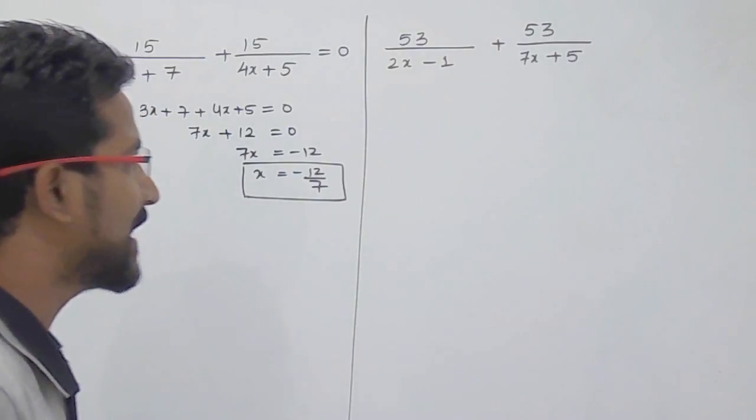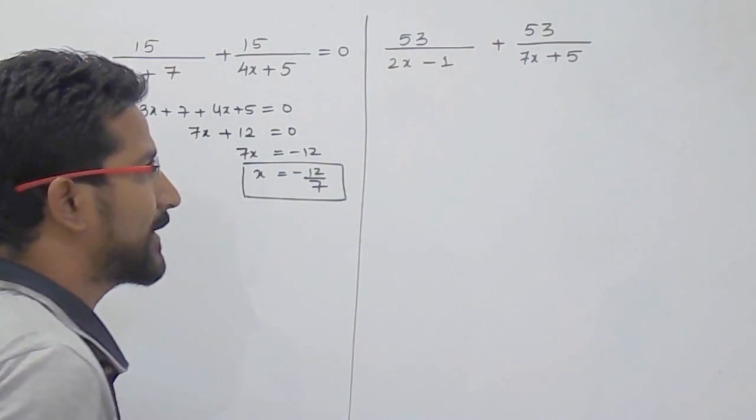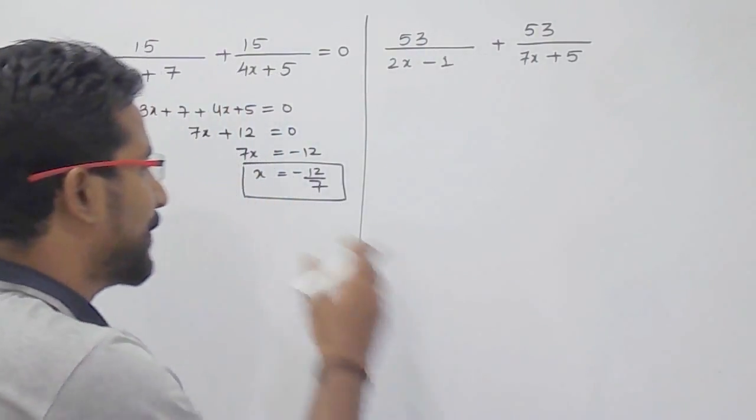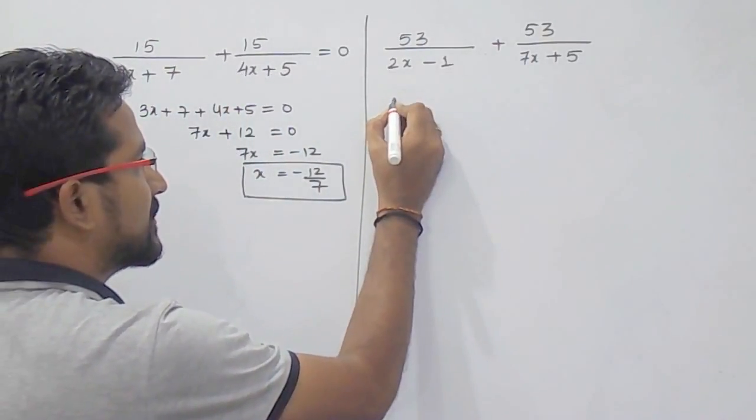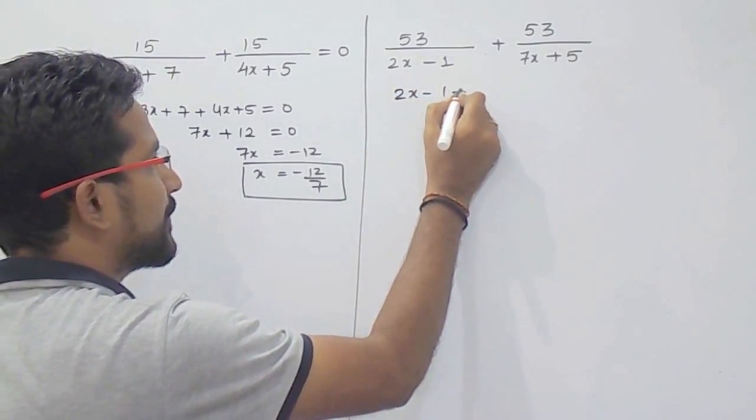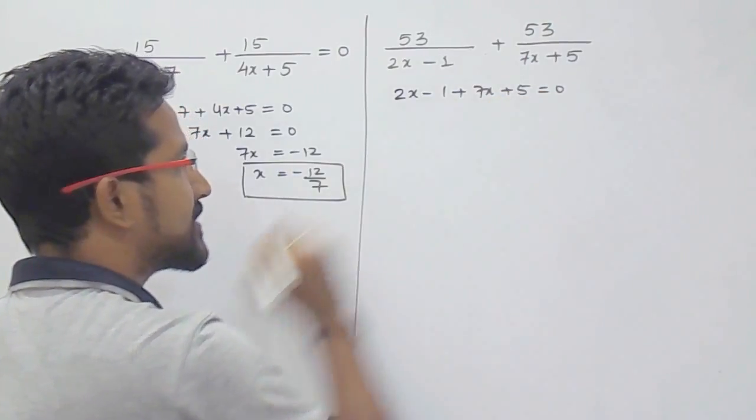Now we will see one more example. 53 upon 2x minus 1 plus 53 by 7x plus 5. Again the numerators are same. You can apply the same method, that is add the denominators: 2x minus 1 plus 7x plus 5 equals 0.